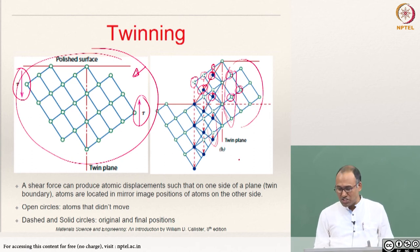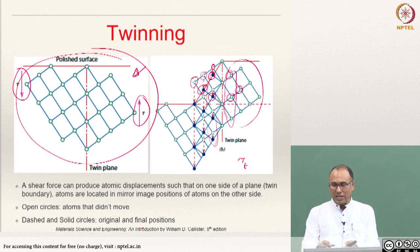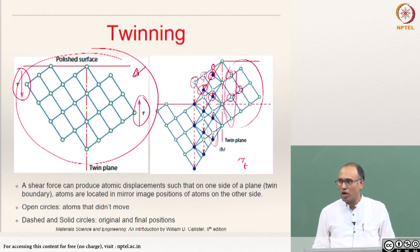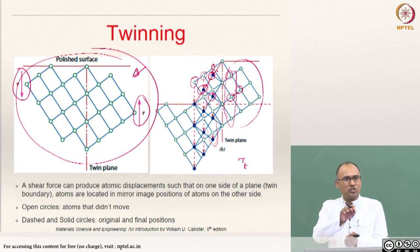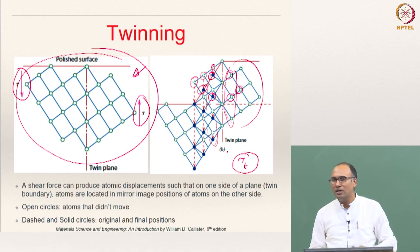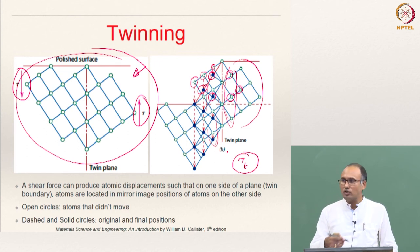The shear stress required to cause twinning is much larger when causing deformation through coordinated atom motion compared to dislocation motion. You do not have to move all the atoms at once; you can move one atom after another, just as in slip through dislocation motion. Similarly, you can also cause twinning through dislocation motion, and the stress required is much less than the theoretical shear strength for twinning. Dislocations help here as well.